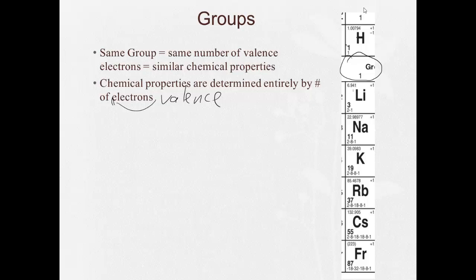So everything in the group, you can see a little better here than on the previous slide, all of these have one valence electron, which is why they'll behave similarly, not exactly the same, but similarly, chemically.